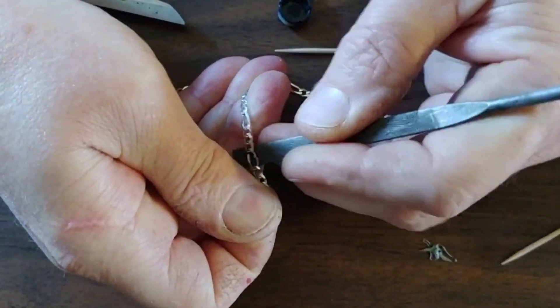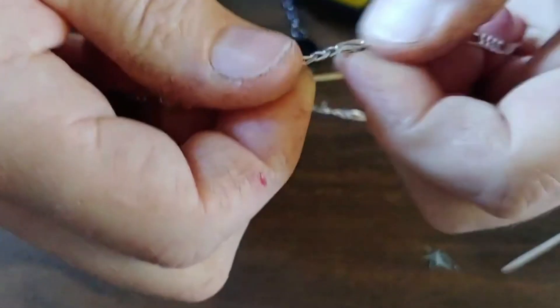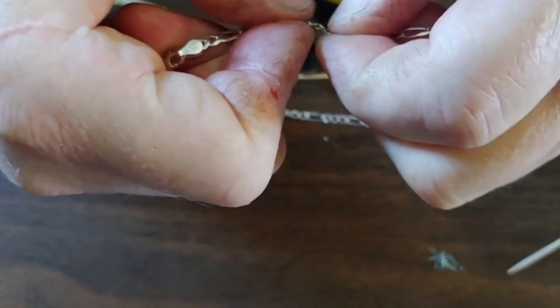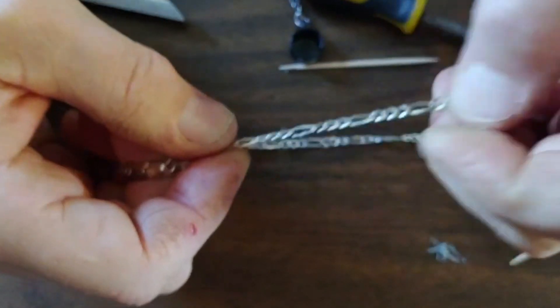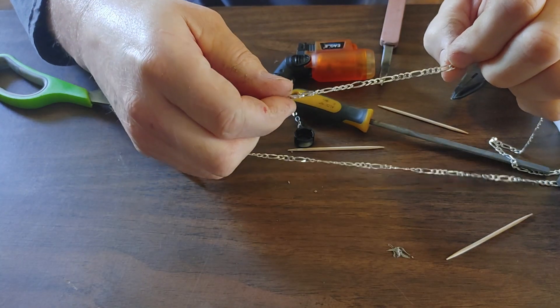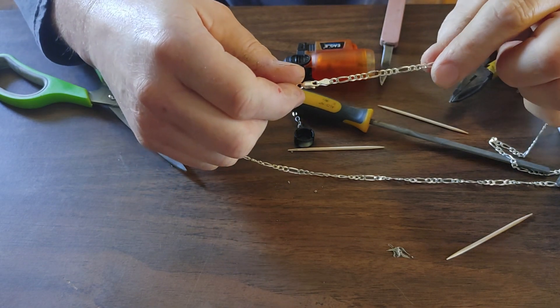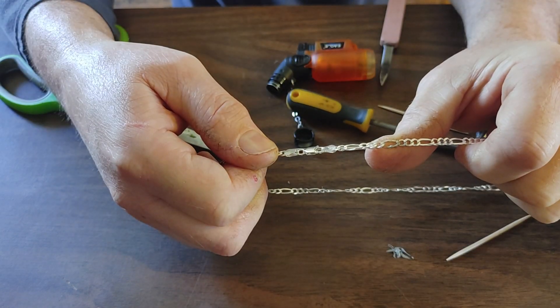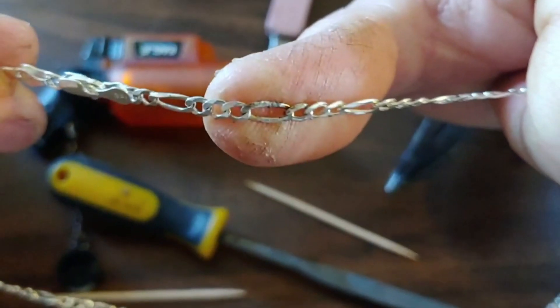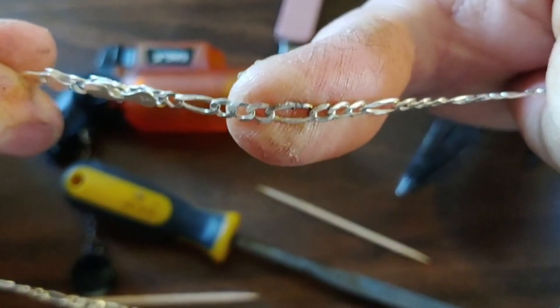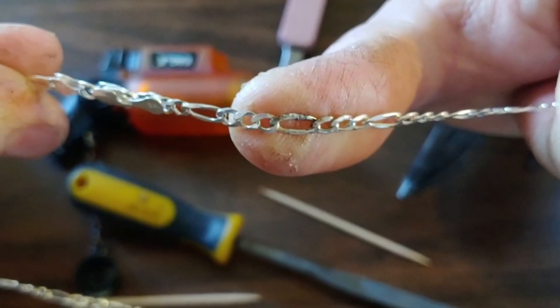When you are satisfied with the smoothness of your repair, visually inspect the repair link and compare it to the links on either side. How does your repair look? Look closely. Really close. Examine all sides of the repaired link. Examine the inside and the outside.